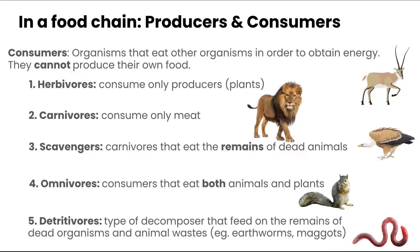Detritivores are a type of decomposer that feeds on the remains of dead organisms and animal waste — things like earthworms or maggots.